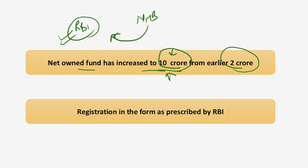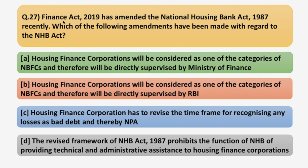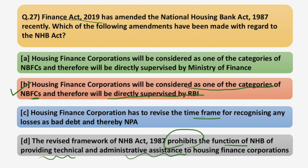Now let's talk about the answer. As per Finance Act 2019, HFCs will be considered as one of the categories of NBFCs and therefore will be directly supervised by RBI. This is the correct option, because no amendments related to a specific time frame have been mentioned by RBI, and the function of NHB in providing technical and administrative assistance has not been prohibited. Moving on to the next question.